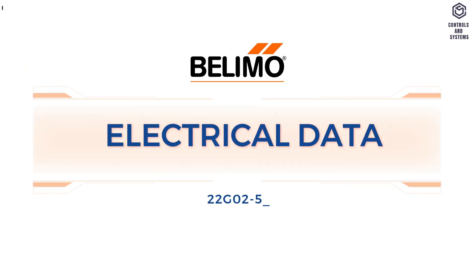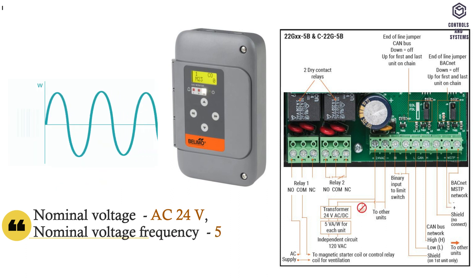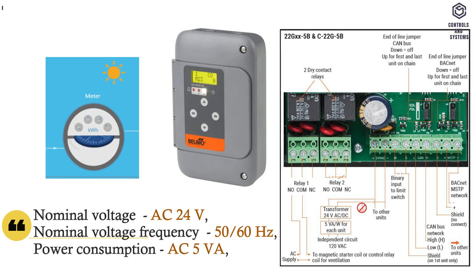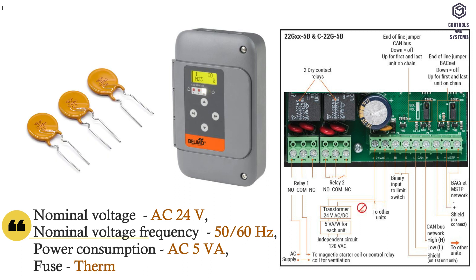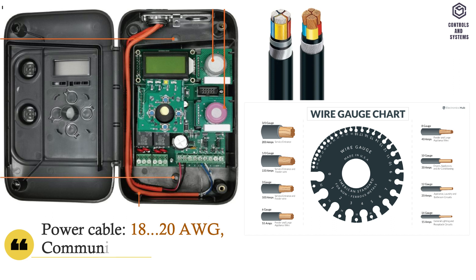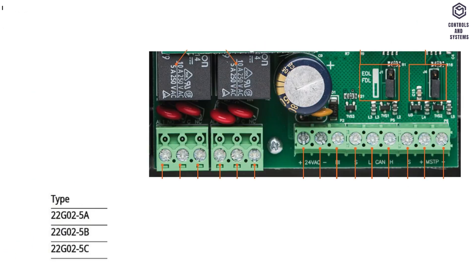Electrical data. Nominal voltage is AC 24V. Frequency is 50 or 60 Hz. Power consumption is 5 VA. Fuse is thermal PTC. Power cable is 18 to 20 AWG. Communication cable is 22 to 24 AWG, twisted pair, shielded-jacketed type.